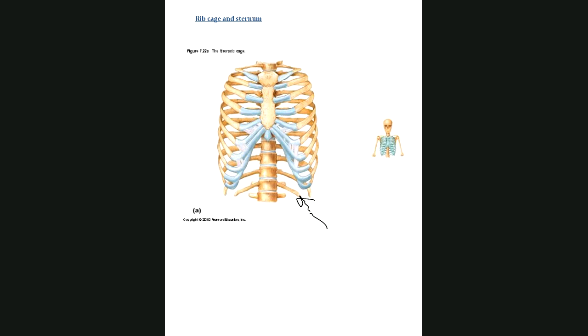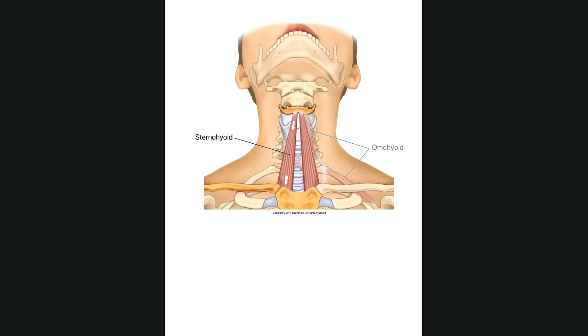On our sternum, we have three major parts. This is a manubrium, this is a body, and this is a xiphoid process. Remember, xiphoid starts with an X. X-I-P-H-O-I-D. And then this is your jugular notch at the top of here.